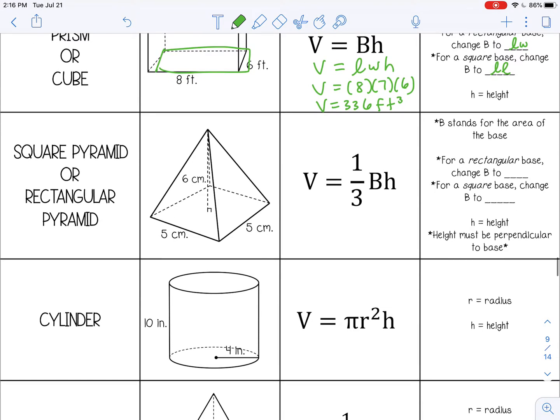The next one is a square pyramid or a rectangular pyramid. And again, you may see a formula with a capital B, which stands for area of the base. So if you have a rectangular base, you can change that B to length times width, because that's the formula for area of a rectangle. And then for a square base, length times length, the h is still the height.